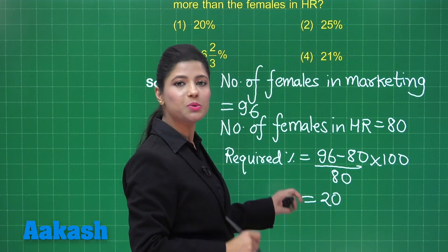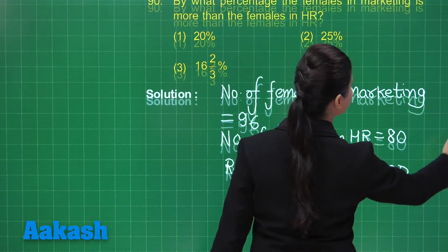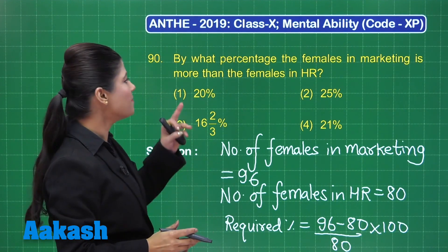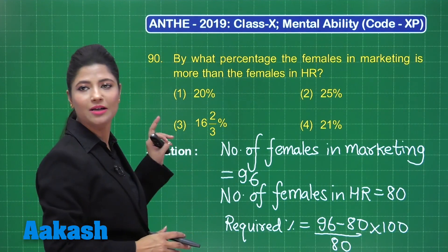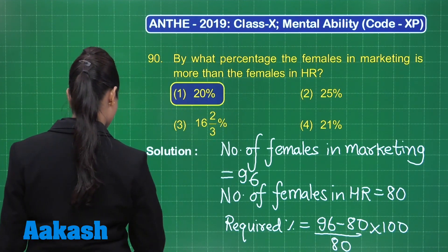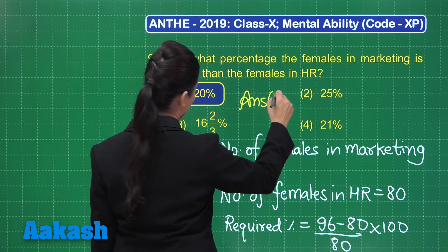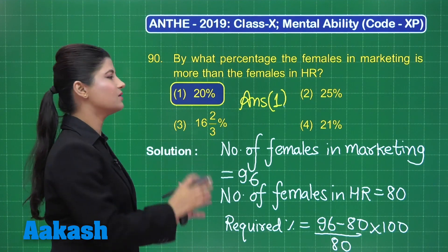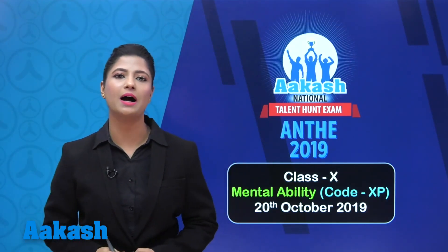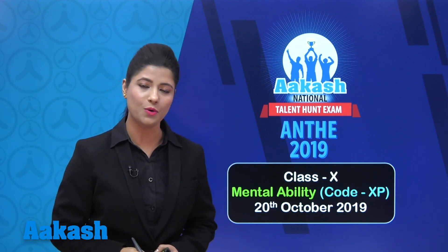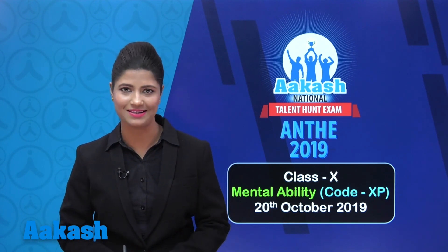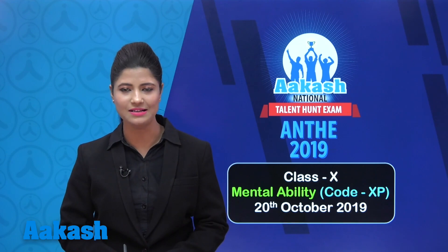The required percentage is 20%, which is present in option 1. So the correct answer for question 90 is option 1. This completes the discussion of the mental ability part of this Class 10th Code XP paper. I hope you have understood all the solutions well and you do really great in your exam. All the best!